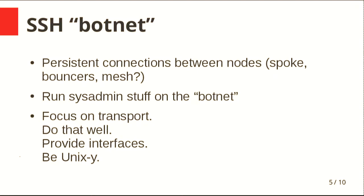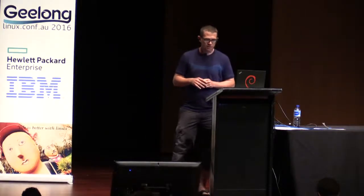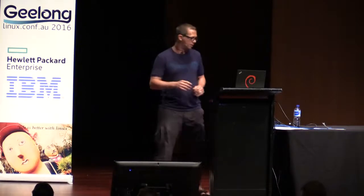Looking around at all the available tools, I found that Puppet has its own transport layer, its own CA, and its own TLS implementation. Salt has the same, which I'm not going to comment on right now. Ansible at least uses SSH, but it's a very ad hoc type thing — it doesn't have any persistent connections. And I figured all of these tools could actually benefit very much from having such a botnet: one tool, in true Unix fashion, that focuses just on transport between all the nodes, does that well, provides interfaces, and becomes a good standing member of the Unix community.